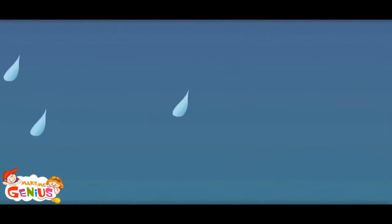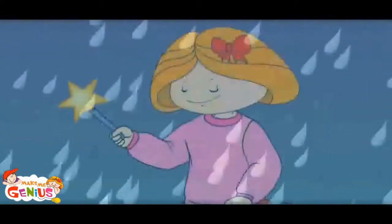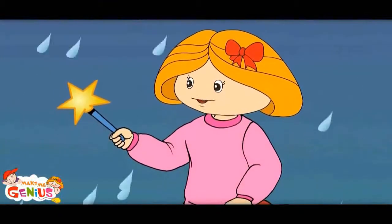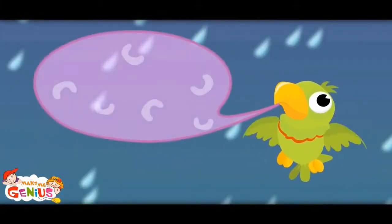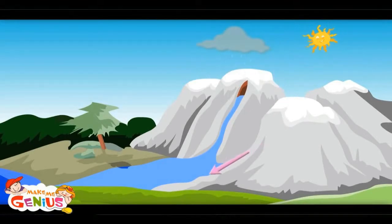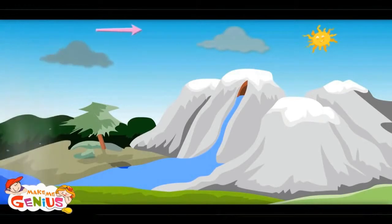Oh, these small drops are becoming bigger! Yes, now they're becoming heavier and have started falling down. They are falling down due to Earth's gravity. This is called precipitation. See, Jimmy — now the raindrops have become part of the river.